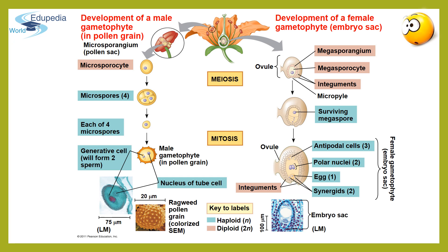After the structure of a flower, let's quickly recap the sexual stages in the life cycle of angiosperms that follow alternation of generations. In angiosperms, the haploid gametophyte alternates with the diploid sporophyte during sexual reproduction.